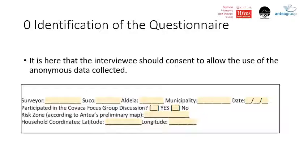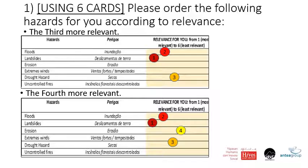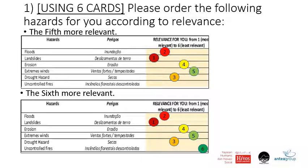You will identify as precisely as possible the coordinates of the person's household. It's very important to rank — depending on what the person says, you put down the cards and fill in all of the options. For example, in question one: number one is landslides, followed by floods, followed by drought hazard, followed by erosion, followed by extreme winds, and last, uncontrolled fires. This is how a hypothetical person would answer question one by ranking the six hazards according to their own perceptions — measuring perceptions.